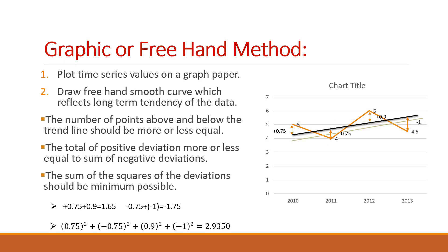Another example shows a line satisfying the first condition — two values above and two values below the trend line. But the positive deviation is more as compared to the negative deviation, so it is not satisfying the second and third conditions. So when we are drawing the trend line, we should keep these three points in mind and draw the line accordingly.